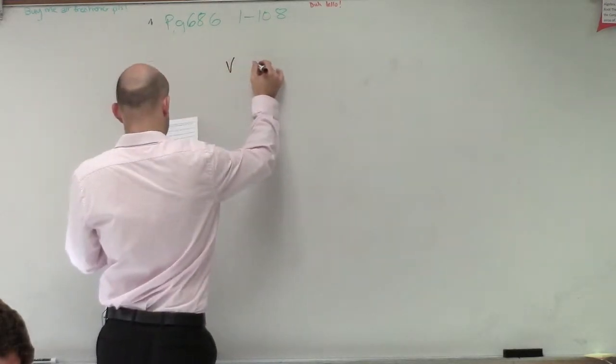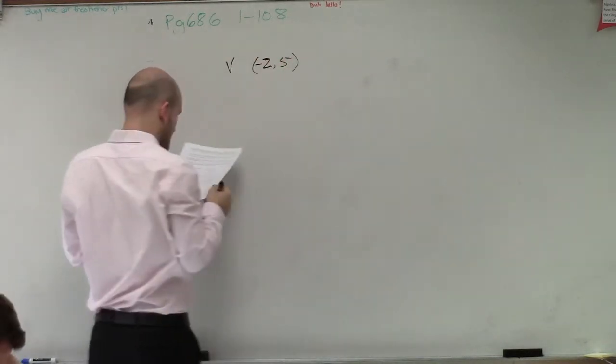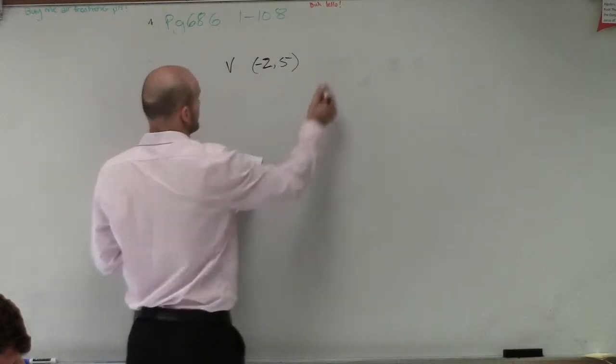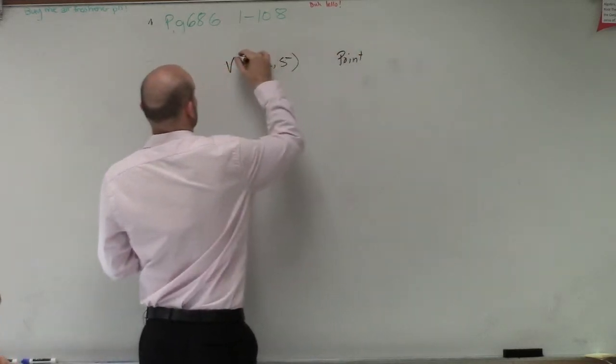So we know the vertex is at negative 2 comma 5 and the solution point is at negative 3 comma 2, vertex.